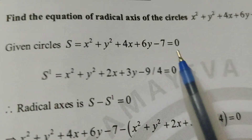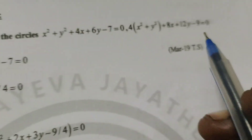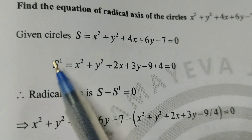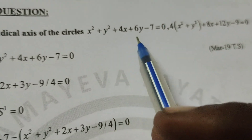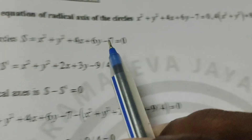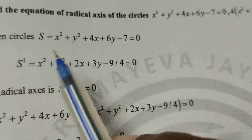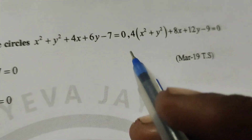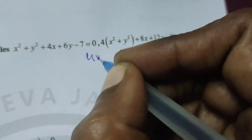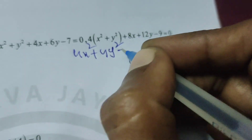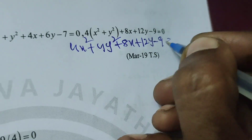Assume the first circle equation is S and the other circle equation is S dash. The first circle: S = x² + y² + 4x + 6y - 7 = 0. S dash = 4x² + 4y² + 8x + 12y - 9 = 0.